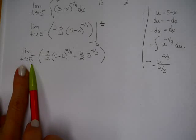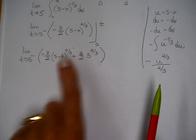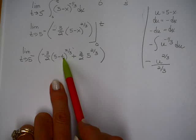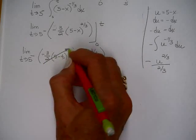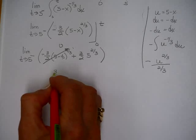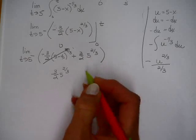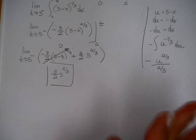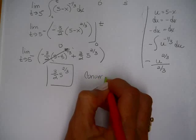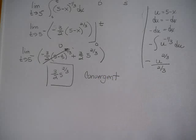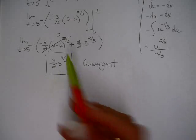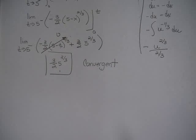Now evaluating the limit as t approaches 5 from the left. It does not affect the 3/2 times 5 to the 2/3 term — it only affects the first term. When you substitute 5 in, 5 minus 5 is zero, so that term goes to zero. The value of this limit is 3/2 times 5 to the 2/3 power. It is convergent, and that is the value of the integral.